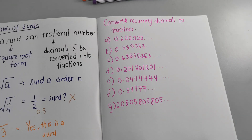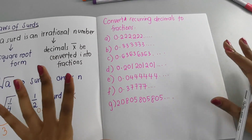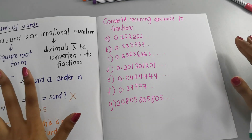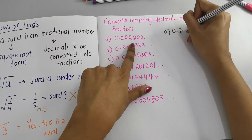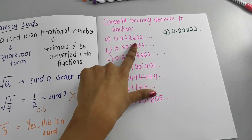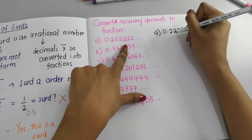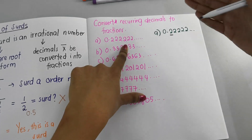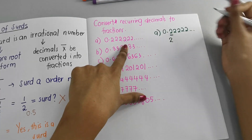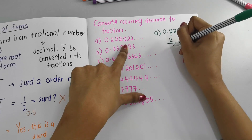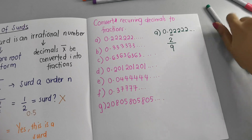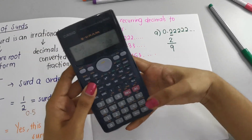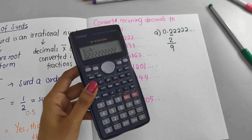Let's look at all seven examples and I'll go through them one by one in detail so you really understand how to convert, because sometimes it can be tricky, but most of the time it's pretty easy. For part (a): 0.22222... — the digit 2 keeps recurring. Since the 2 is going on forever, I take 2 and put it as a fraction over 9. It's always going to be 9 — that's one of the laws. So the answer is 2/9, which you can verify in a calculator.